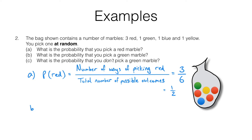In part B we're looking for the probability of picking a green marble — the number of ways of picking a green marble over the total number of possible outcomes. There's only one way you can pick a green and there are still six possible outcomes, so the answer is one sixth.